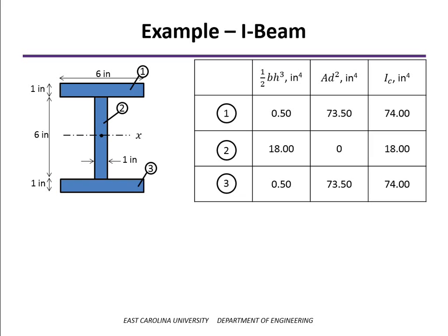If we look at the web, the 1/12 bh³ is relatively large because of its height being cubed. And it lies right on the x-axis at centroid, so the Ad² term is 0. When we add everything together, we get 166 inches to the 4th, the same result.